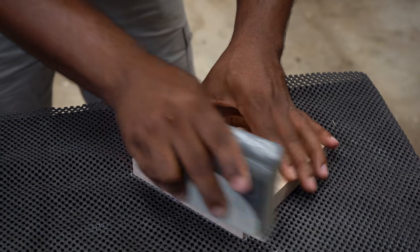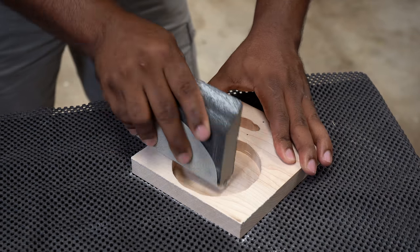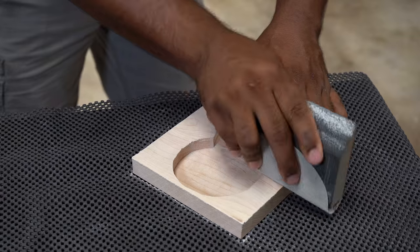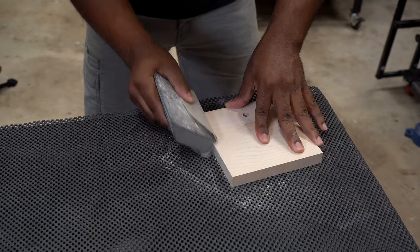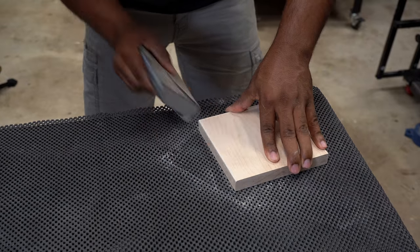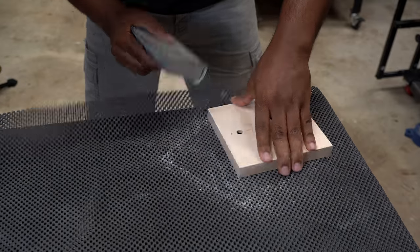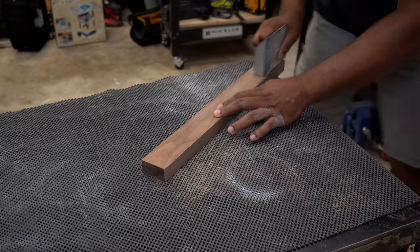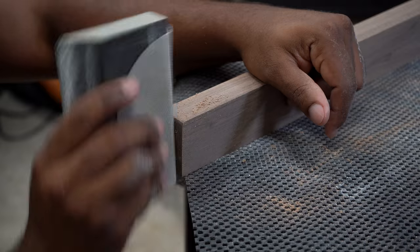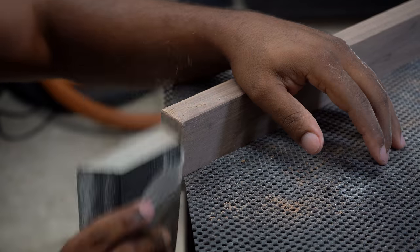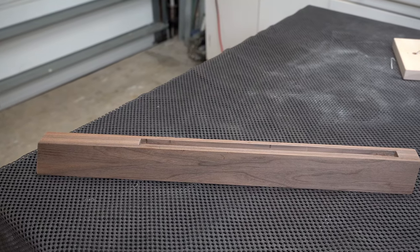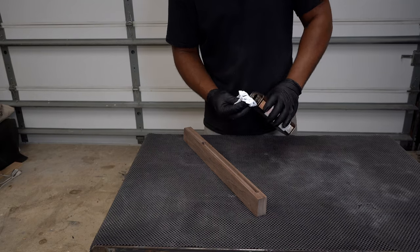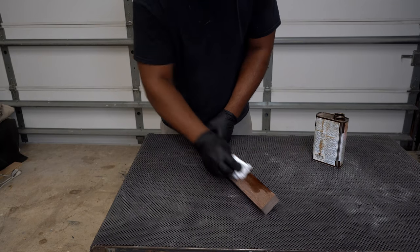Before assembling, I sand down a section that may be hard to get to later. To brighten up the walnut and give it a new look, I'll use a walnut danish oil.